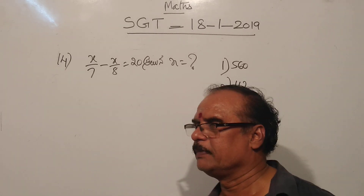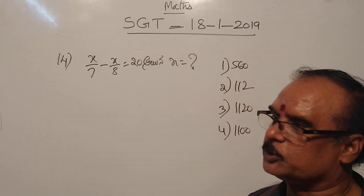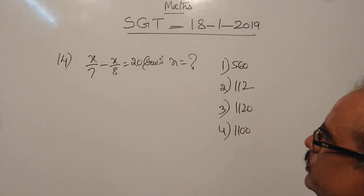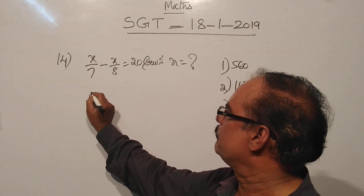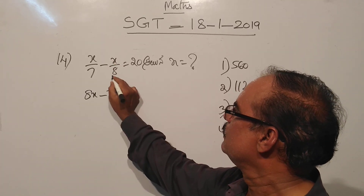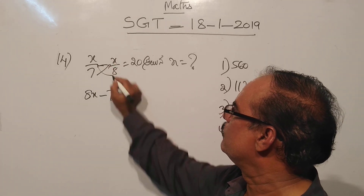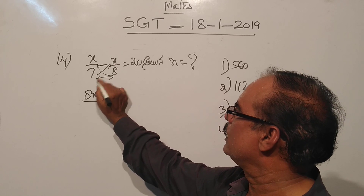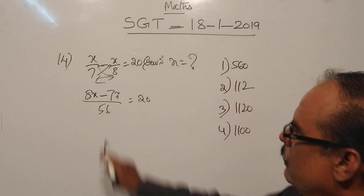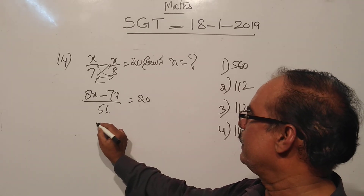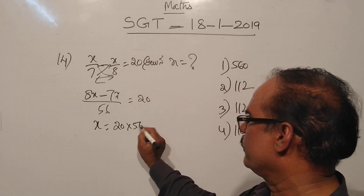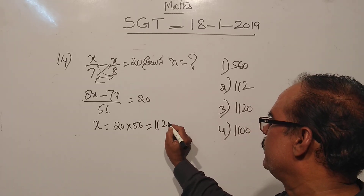Question 14: x by 7 minus x by 8 is 20. So 8x minus 7x equals 56 into 20. That gives x equal to 1120. 8x and 7x gives x, and 2 times that equals 11, so 10 is 20.